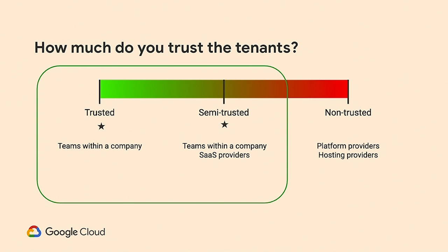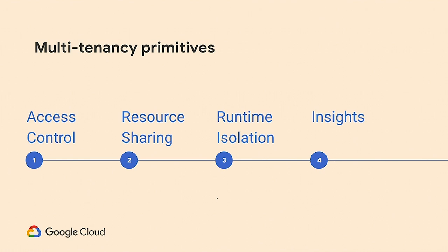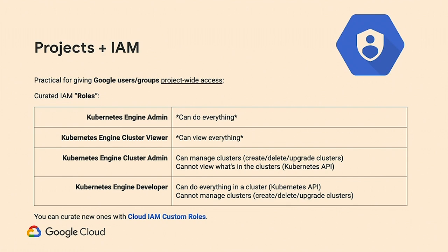With that, let's look at how to implement multi-tenancy. There are four things to be careful about: setting up the right access control, setting up fair resource sharing, isolating workloads from other workloads and users, and observing what your users are actually doing — how much resources they're using. Let's look at each in detail. First, access control.